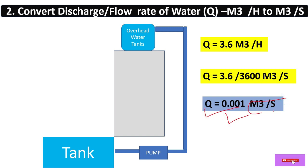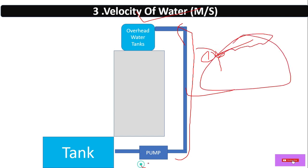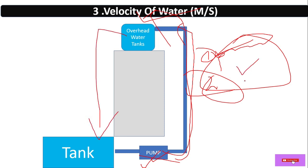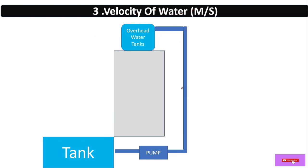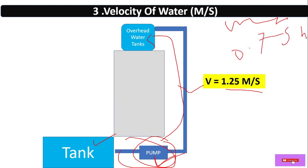In Step 3, we need to take the velocity of the water. There are two types of velocity: pressure velocity — when we transfer water with the help of a pump, we are providing pressure; and gravity velocity — when we distribute water by gravity. In this case we are transferring water from the underground tank to the overhead tank using a pump, so it is pressure velocity. The value of pressure velocity is 1.25 m/s; for gravity velocity we take 0.75 m/s.